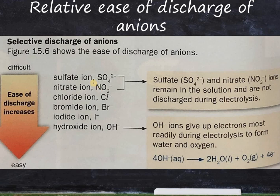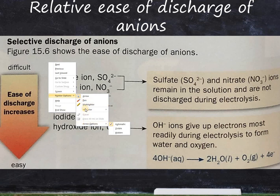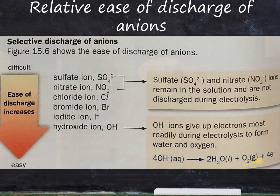For the anion part, if the solution contains sulfate, nitrate, chloride, bromide, iodide, or hydroxide ions, the ease of discharge is highest for OH-. The hydroxide ion will always try to form oxygen and is discharged most readily. The balanced equation shows: 4OH⁻ → 2H₂O + O₂ + 4e⁻.